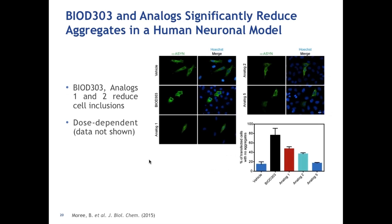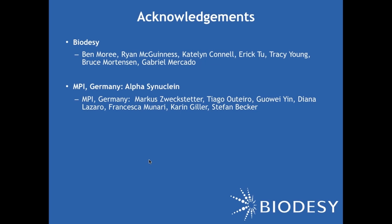In conclusion, SHG is capable of detecting conformational changes in proteins very sensitively. The study shown here works with an intrinsically disordered protein that is difficult to study by NMR and cannot be studied by crystallography. We can detect ligand binding in the millimolar range, and we have other studies showing detection in the nanomolar range as well, making us sensitive to the full range of affinities one might wish to study. I'd like to acknowledge all of the people at Biotisi who participated in this work and our collaborators Marcus Weckstetter, Tiago Lotero, and their colleagues.